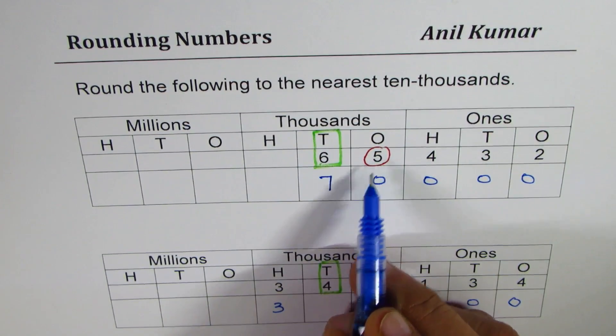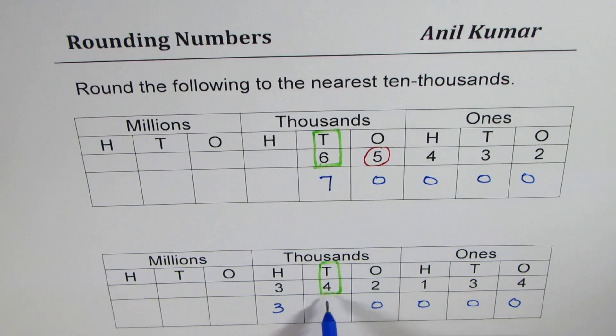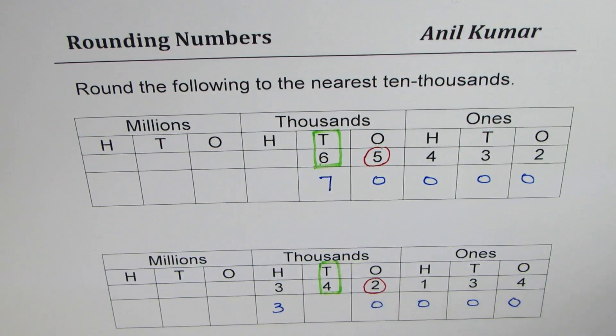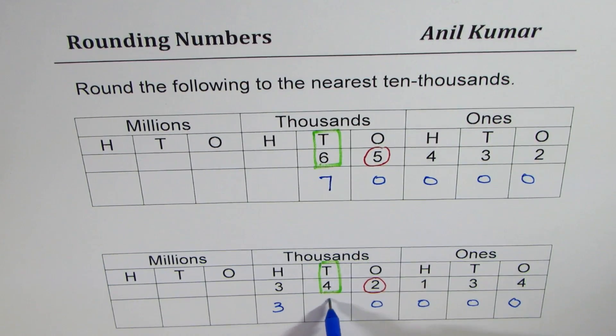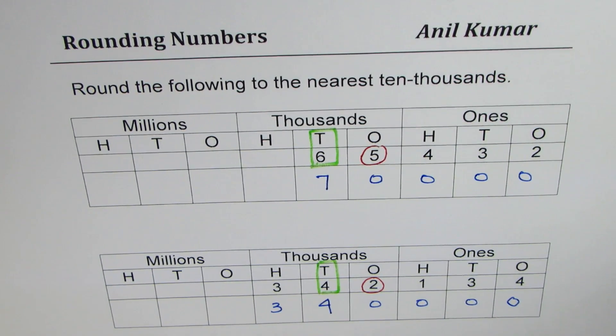65,000 is closer to 70,000. Now in the second case the number to the right is two. It is much lower than five and therefore four remains as four. So 342,000 has been rounded to 340,000.